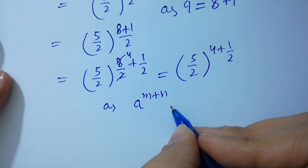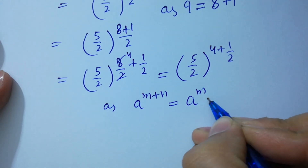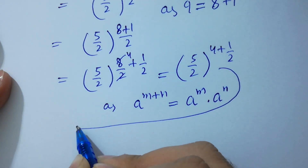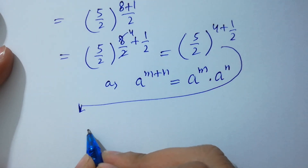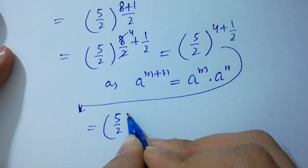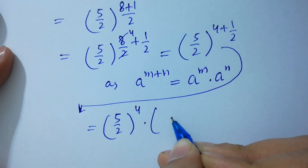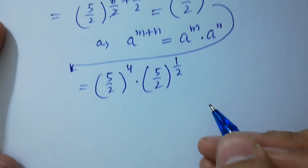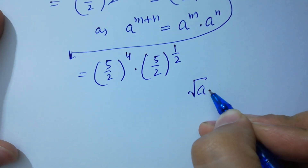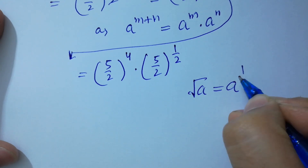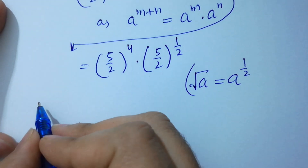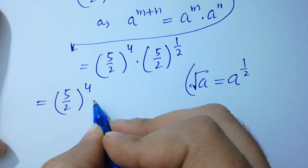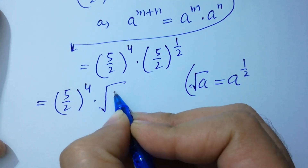Using the rule a to the power m plus n equals a to the power m times a to the power n, it will be 5 over 2 to the power 4, times 5 over 2 to the power 1 over 2. So it will be 5 over 2 to the whole power 4, times the square root of 5 over 2.